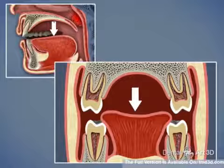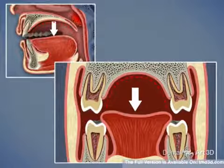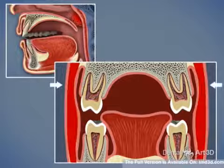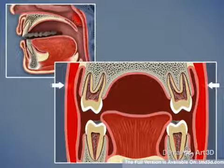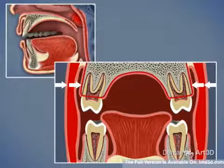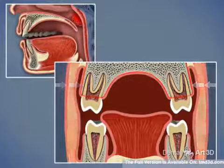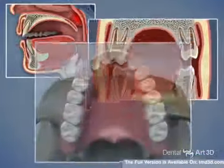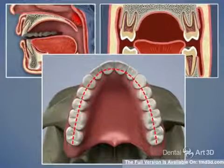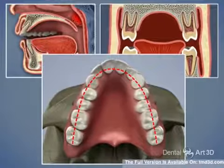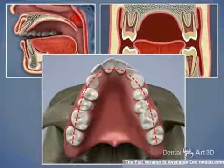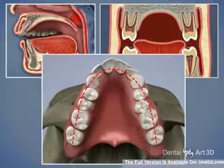Nasal breathing is the correct way for air to enter the body, and during nasal breathing, the tongue rests at the palate and the pressure of the cheeks is balanced by the tongue. During mouth breathing, the pressure from the cheeks is unopposed by the tongue. The oral system becomes unbalanced and results in the deformation of the upper jaw, creating a V-shaped arch, as opposed to a correct U-shaped arch.